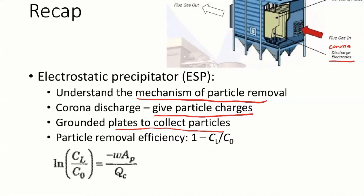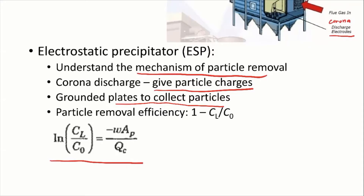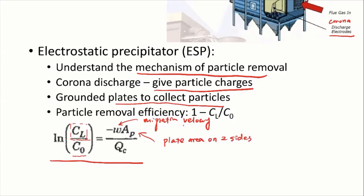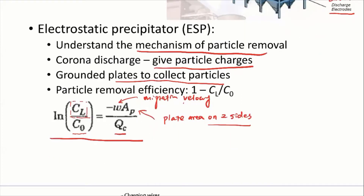So finally, we derived the equation describing the concentration of particles at the end of the ESP. It satisfies this equation where log(C_L / C_0) — basically the concentration of particles at the end of an ESP of length L divided by C_0, the inlet concentration — equals negative W, the migration velocity, multiplied by A_P. A_P is the plate area on two sides, because when we collect particles, the plate collects on both the left and right sides. Q_C is the flow rate of the flue gas.